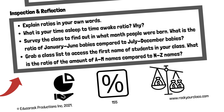Survey the class to find out in what month people were born. What is the ratio of January to June babies compared to July to December babies? Grab a class list to access the first names of students in your class. What is the ratio of the amount of A to M names compared to N to Z names?